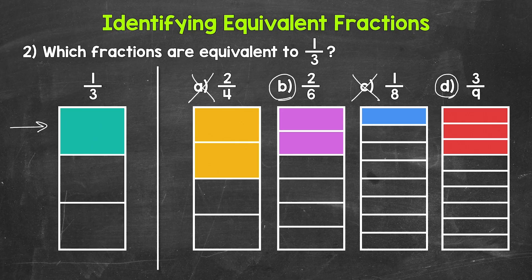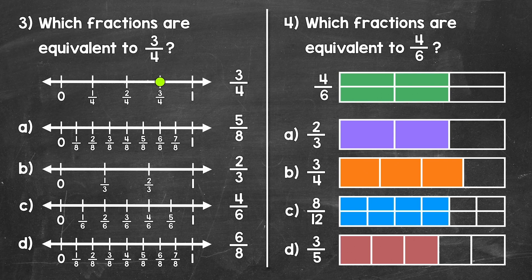Let's move on to our last two examples, numbers 3 and 4. Starting with number 3, which fractions are equivalent to 3 fourths? Here we're going to be working with number lines to help us out. Remember, equivalent fractions are going to be at the same place, the same position on a number line. We have our number line with 3 fourths marked.